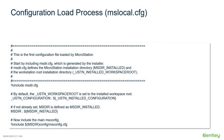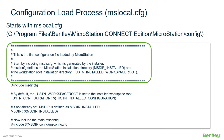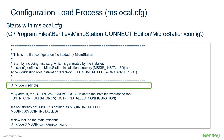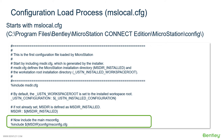The configuration load process starts with the mslocal.cfg file, located in the program files Bentley MicroStation Connect Edition MicroStation Config folder. Looking at this file directly, the top portion is a comment section. Using the pound sign, you can add comments or annotations within the file — anything with a pound sign is not processed. The next thing is an include statement of the msdir, which holds installed configuration variables, followed by the msconfig file.